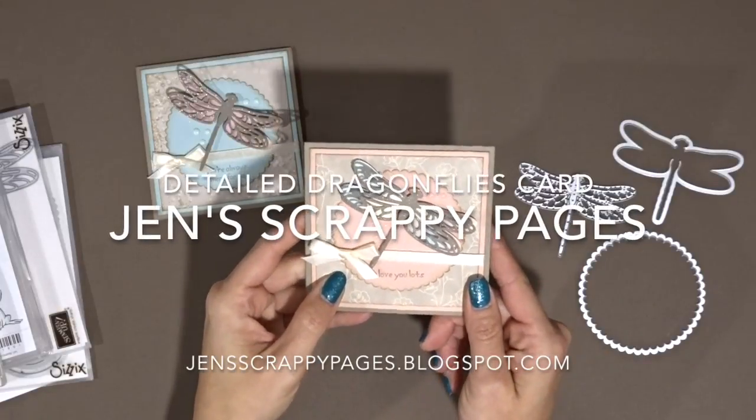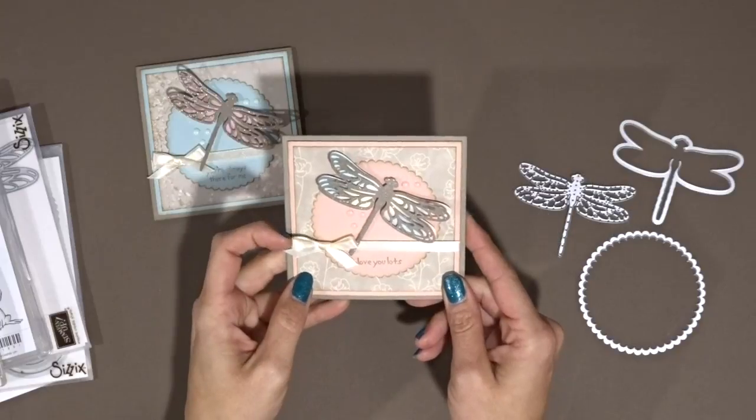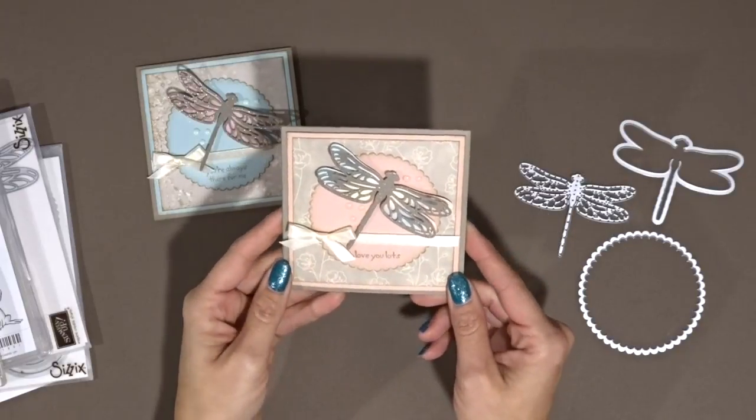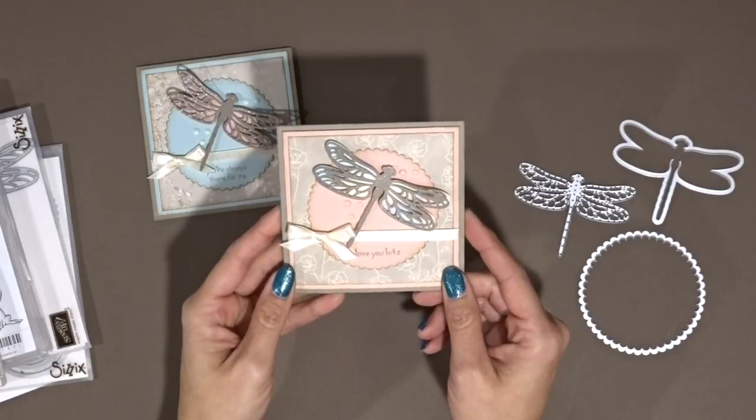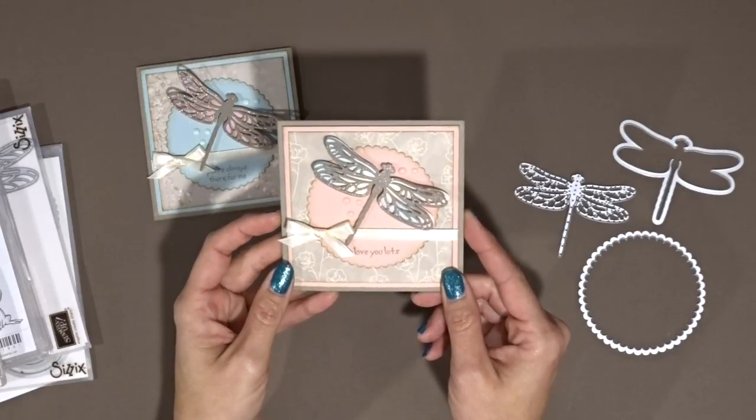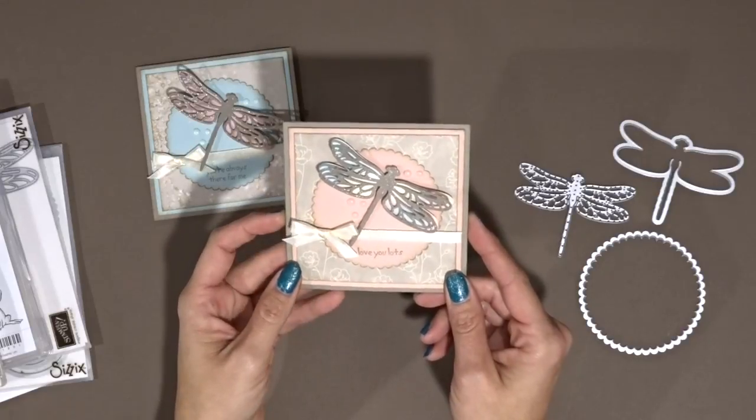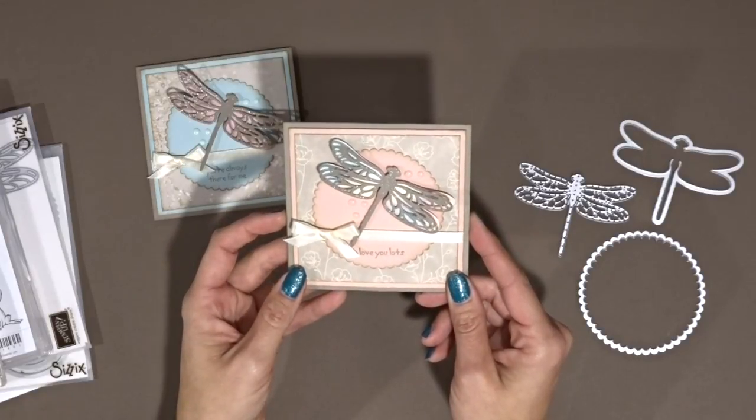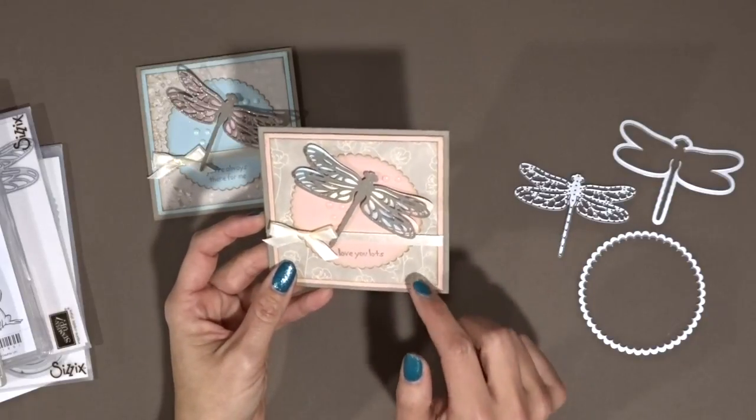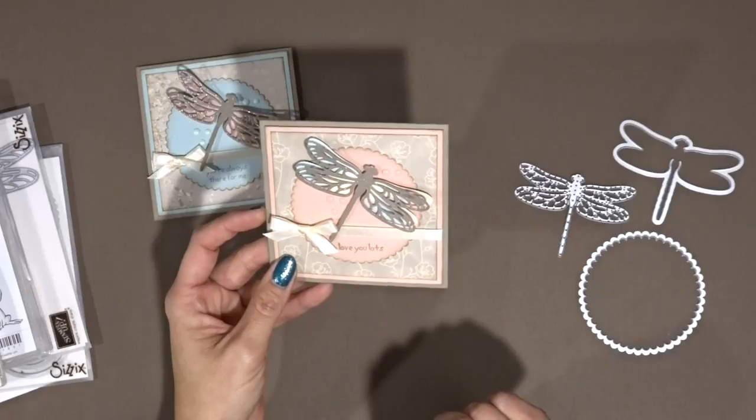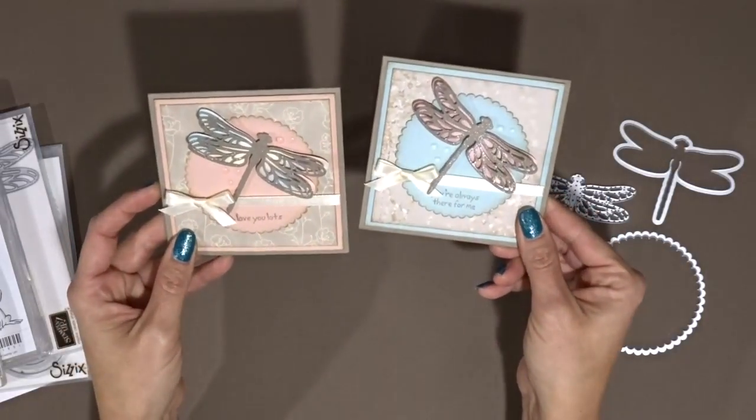Hey everyone, this is Jen over at jenscrappypages.blogspot.com and today I'm going to show you how to create this really cute square card that I made using the detailed dragonfly thinlits dies and the falling in love designer series paper. I absolutely love the way this card turned out. In fact, I made another one exactly like it I liked it so much.